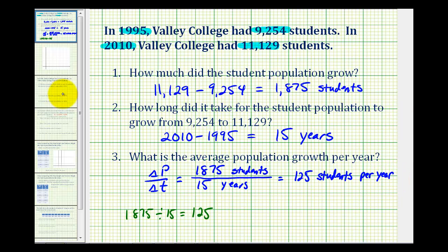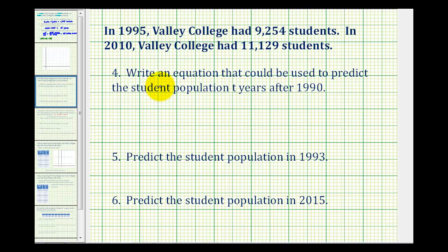Now let's take a look at some more questions. Number four, we want to write an equation that could be used to predict the student population t years after 1990. We're going to use slope-intercept form of a linear equation, which is y equals mx plus b, where m is the slope and b is the y-intercept. For our example, y is going to be the population, so we'll use p, and x is going to be the time, so we'll use t.